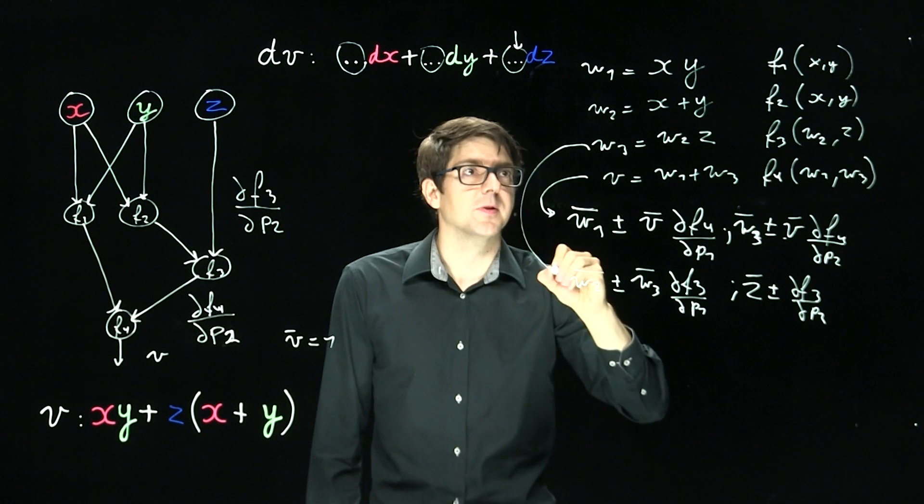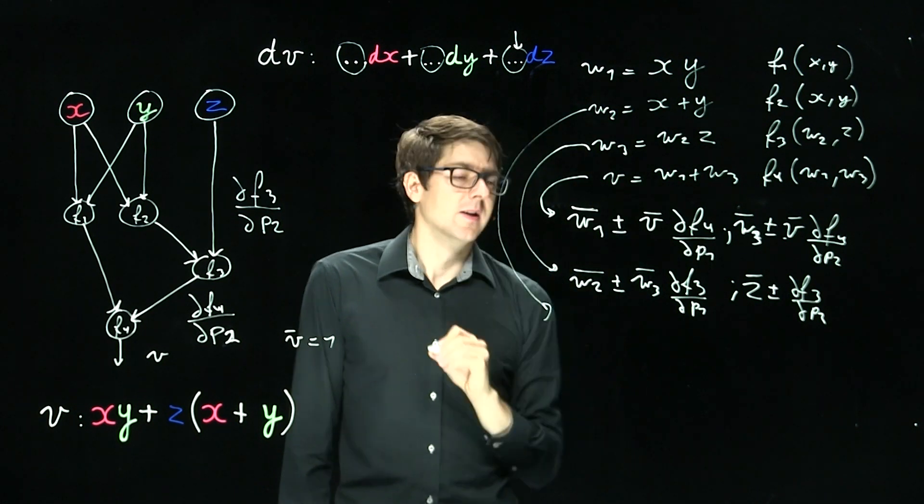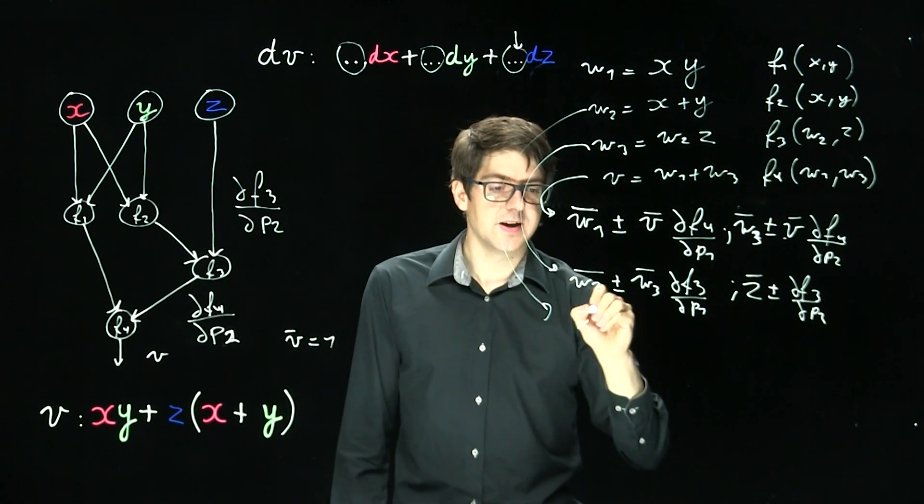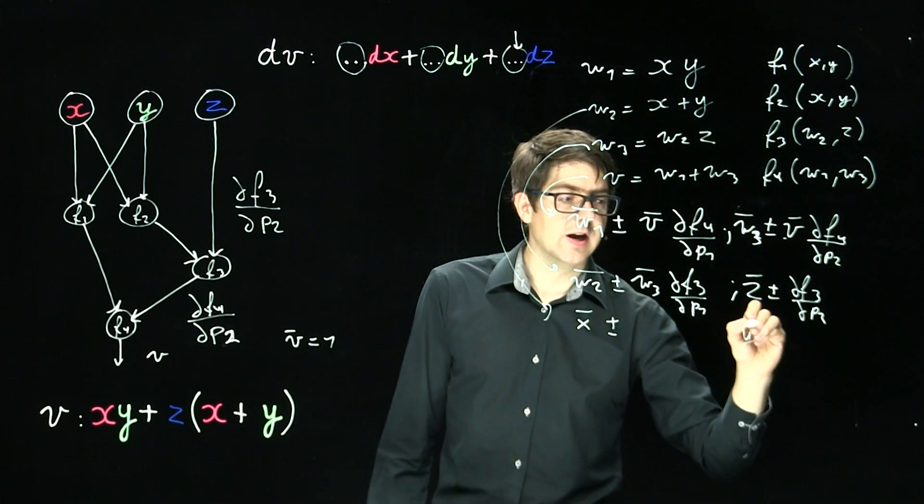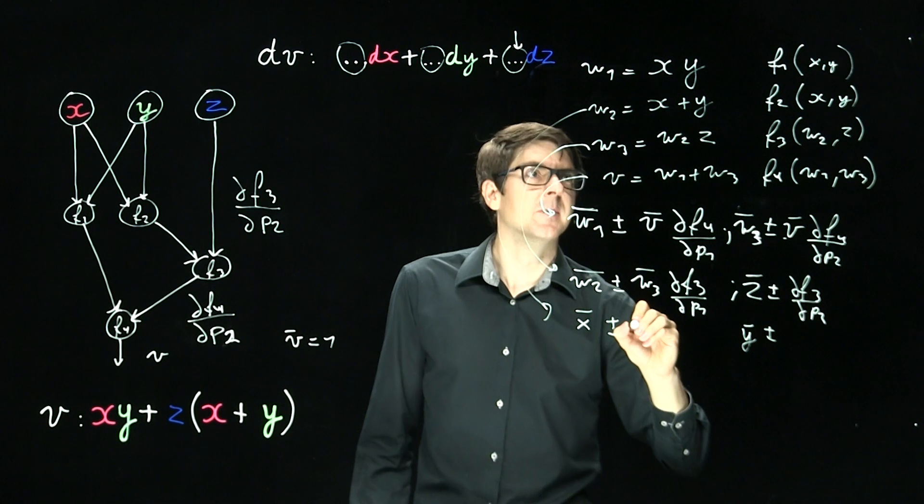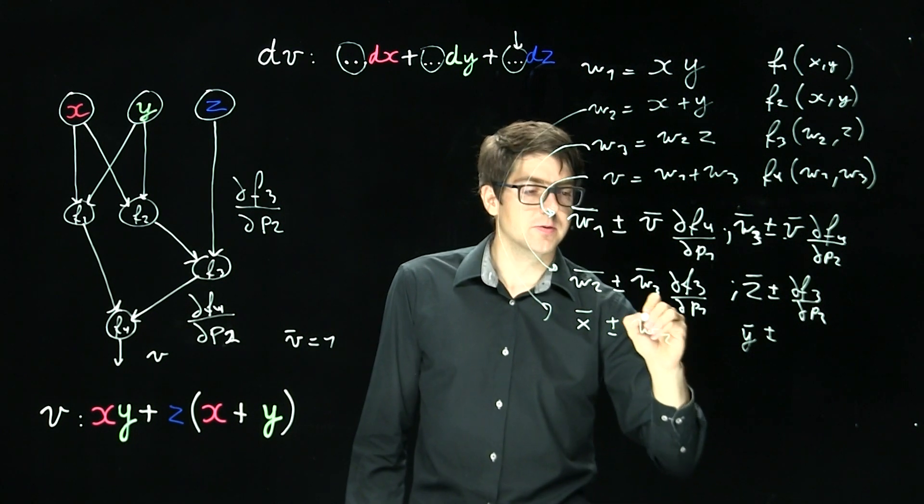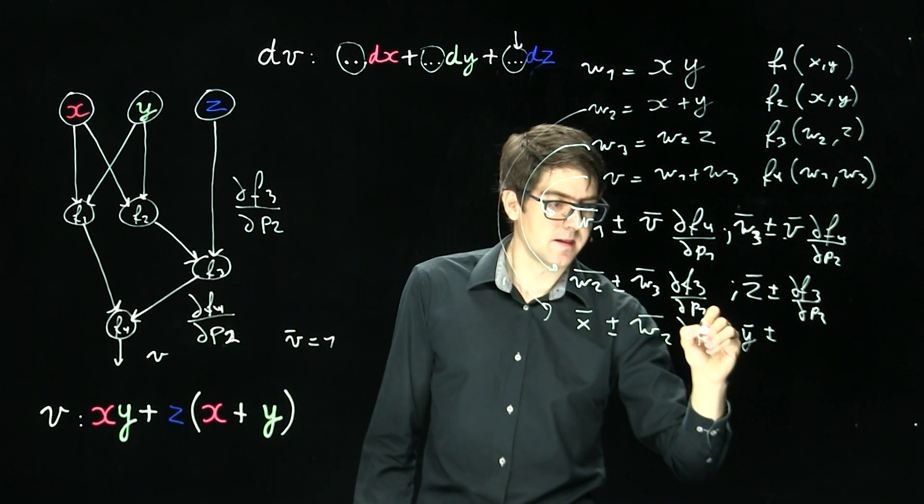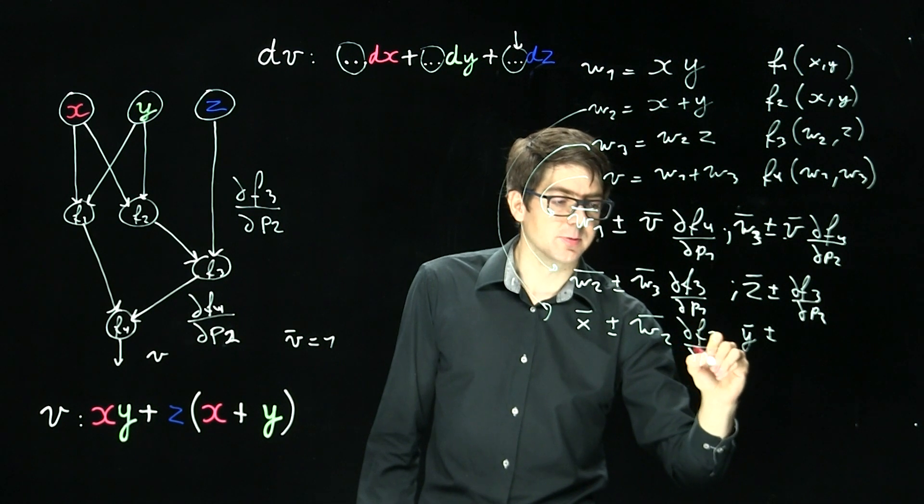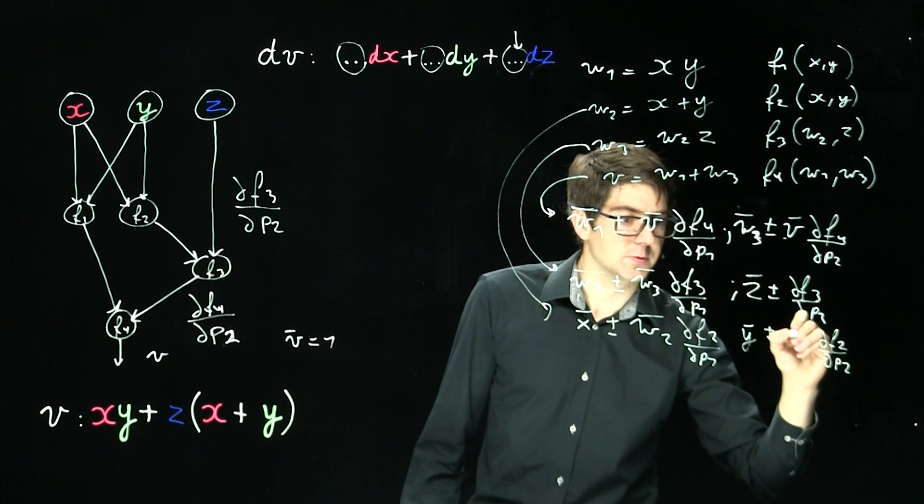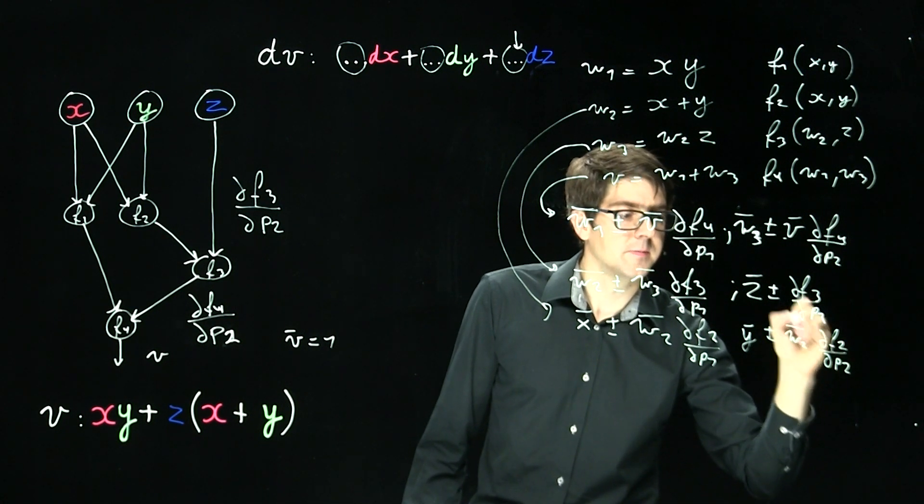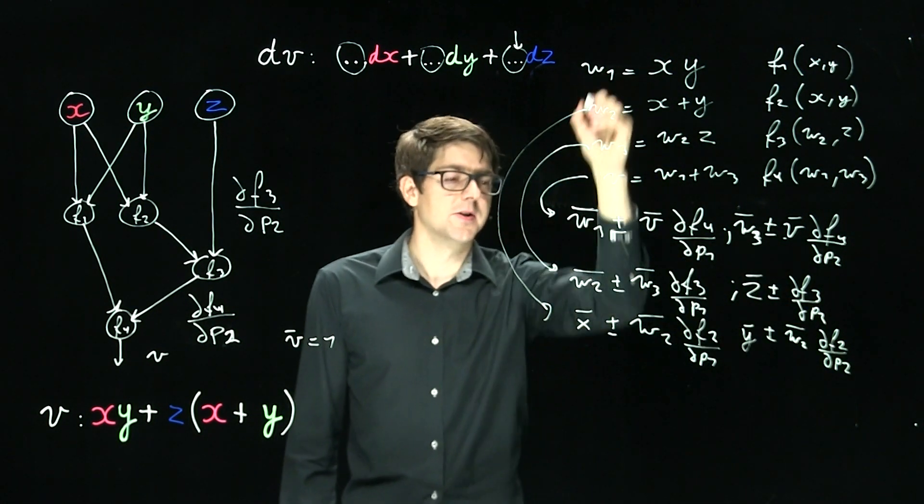So this corresponds to here. Here we have X bar plus equals and Y bar plus equals and W2 bar partial with respect to P1, partial with respect to argument 2. Right, last one.